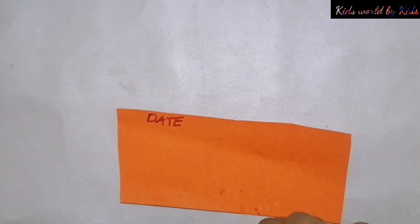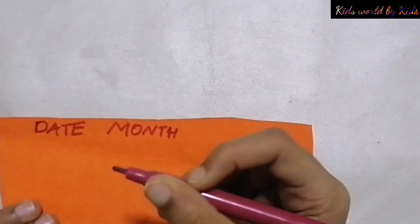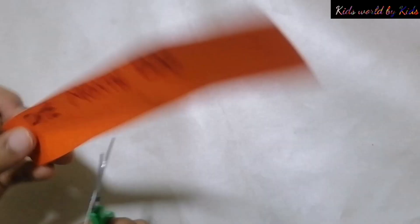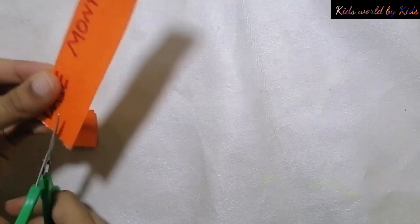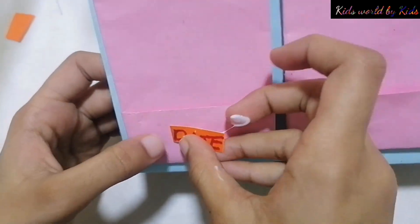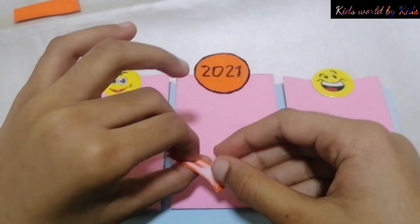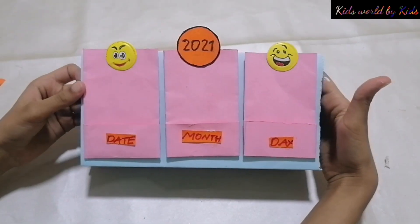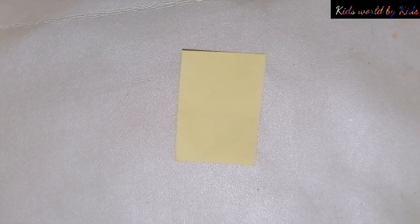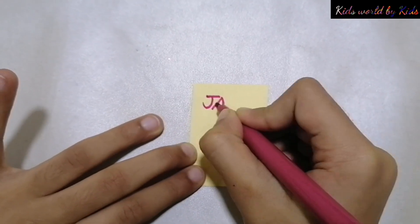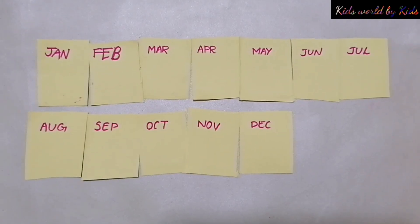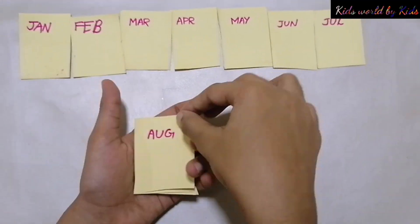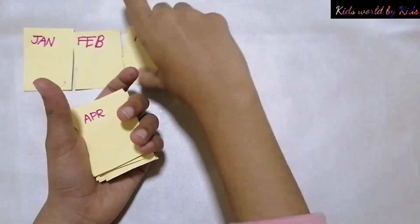Write date, month, day. Cut and paste. Take a small paper, write all months: January, February, March, April, May, June, July, August, September, October, November, December.